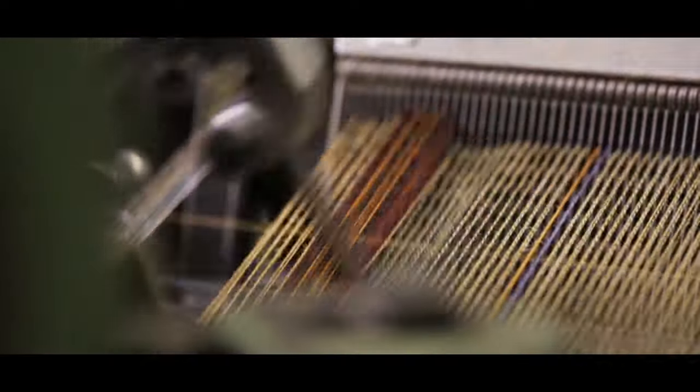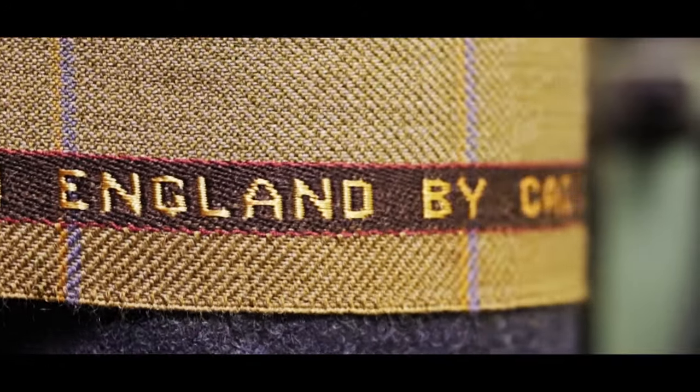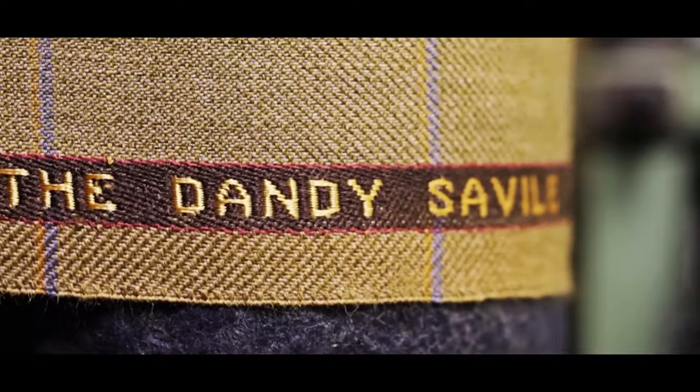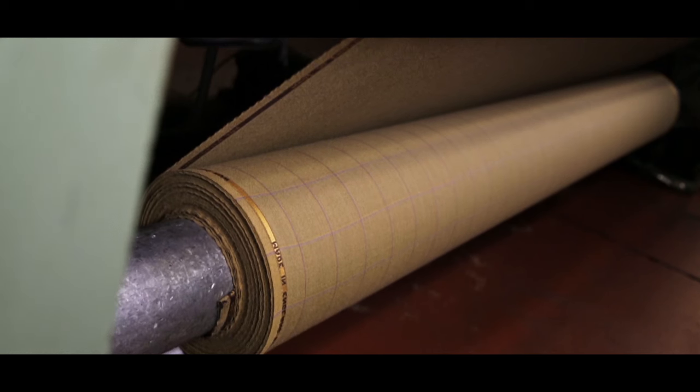What we've done is make a 13-ounce worsted look like a tweed. So it ticks all the boxes of wanting to have a nice casual jacket, but not having to do it in that heavy, hard cloth. So I think what we've done is produced a really fantastic, unique cloth that puts us at the forefront of tailoring ability.